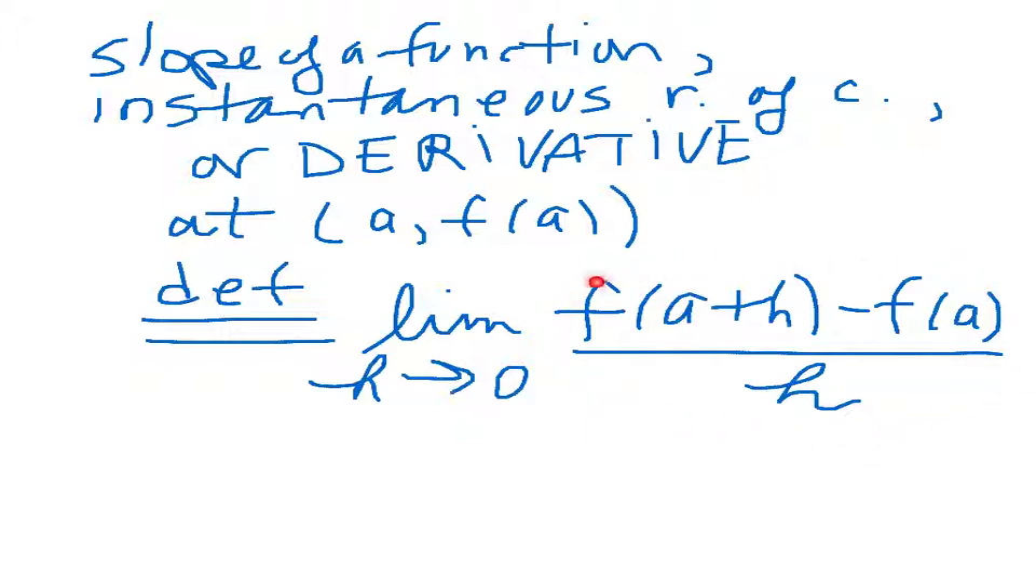And to be more specific, this is the slope of a secant line through the points (a, f(a)) and (a + h, f(a + h)). So, finally, let's look at a real-world example of this.